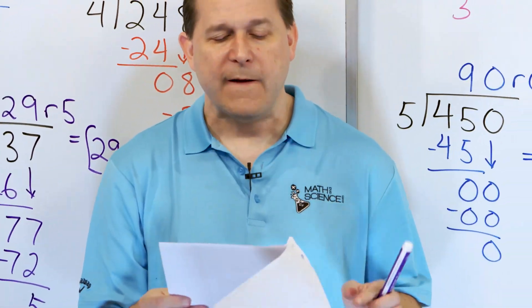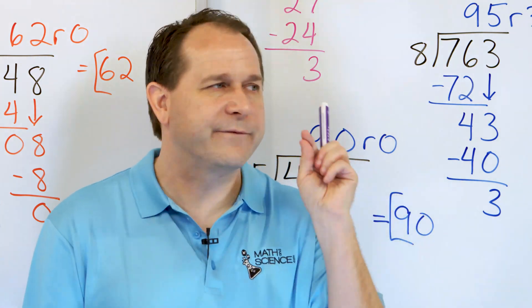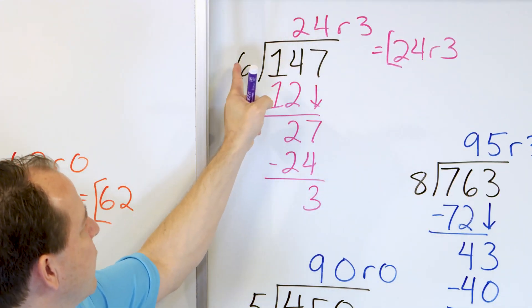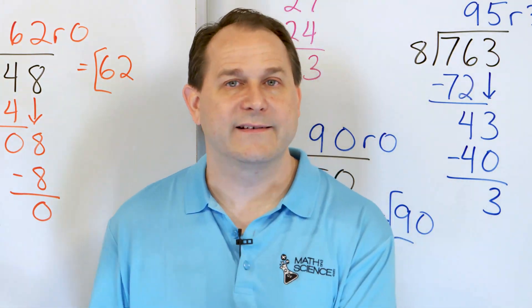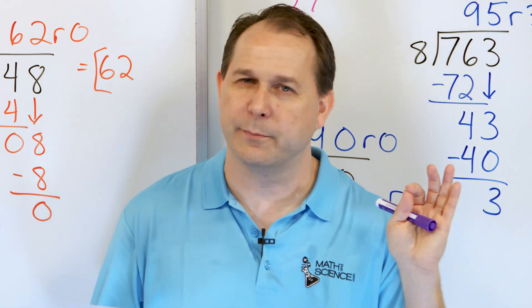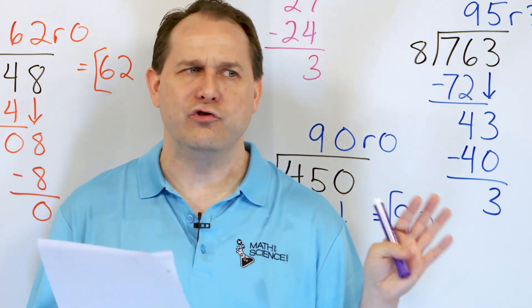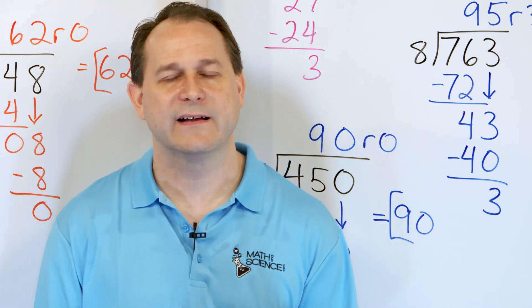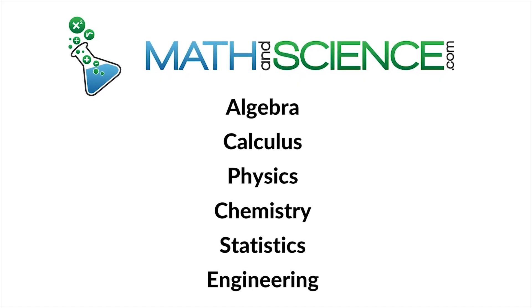Now we've learned how to divide a 3-digit number by a 1-digit number. The first digit here was always less than what's on the outside, which is why we always had a 2-digit answer. In the next lesson, we're going to divide 3-digit numbers by 1-digit numbers again, but with larger numbers so we'll actually have 3-digit answers. It doesn't change too much what we're doing, but we do need to practice. Follow me to the next lesson for more practice dividing 3-digit numbers. Learn anything at mathandscience.com.